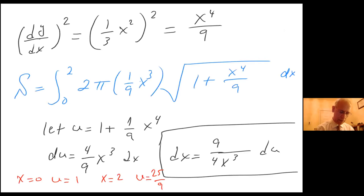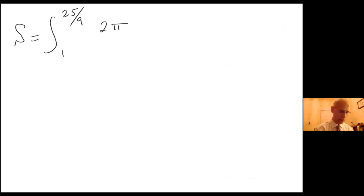So using this information, let me go to the next page. Surface area equals from 1 to 25 over 9. I had 2π over 9 x cubed times u to the one half, and then I had 9 over 4 x cubed du.